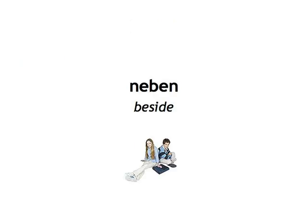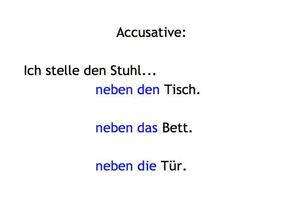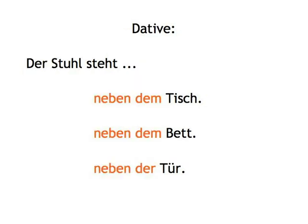Neben, meaning beside. In the accusative, to show movement. Ich stelle den Stuhl neben den Tisch. Ich stelle den Stuhl neben das Bett. Ich stelle den Stuhl neben die Tür. In the dative, to show location. Der Stuhl steht neben dem Tisch. Der Stuhl steht neben dem Bett. Der Stuhl steht neben der Tür — the chair is next to the door.